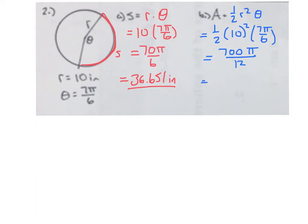Let our calculator calculate that. We'll have 183.259. And the thing is, this is an area. The area of this sector is measured in square units. Our units are inches, so this area is going to be in inches squared.